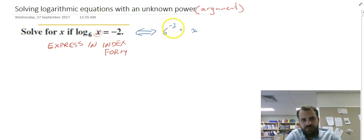Now you know that negative powers mean that it's on the bottom of the fraction. So 6 to the negative 2 is the same as 1 over 6 squared, and 6 squared is 36. So therefore x is equal to 1 over 36.